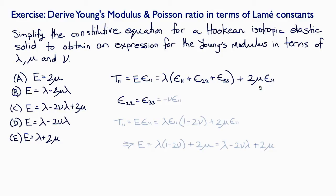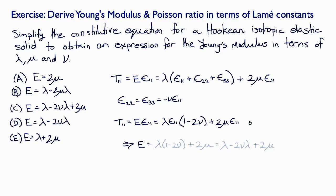Now, making use of the definition of the Poisson's ratio, namely that epsilon 22 and epsilon 33 in this case are equal to minus nu times epsilon 11, then we get that E times epsilon 11 equals lambda times epsilon 11 times (1 minus 2 nu) plus 2 mu times epsilon 11.